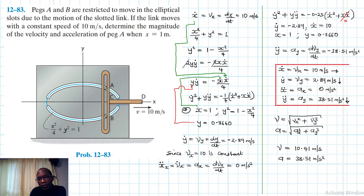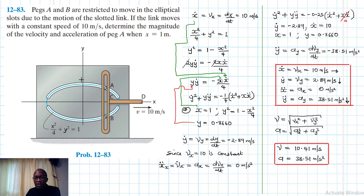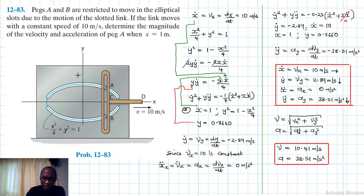We found the individual components, and using the Pythagorean theorem we arrived at the magnitudes. I hope this video was helpful — if it was, give me a thumbs up, like the video, continue subscribing and liking my channel. Bye-bye and I'll see you in my next screencast.